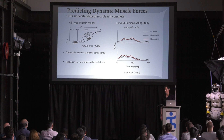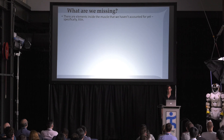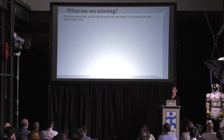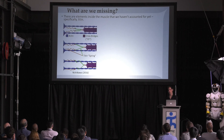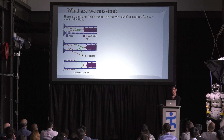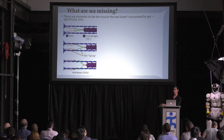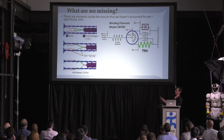That begs the question: what are we missing? In the last 15 years there's been a lot of work showing how a spring-like element inside muscle that we once thought was passive is actually a bit more active, and that it binds to relatively rigid members inside the muscle during contraction. Taking it a step further, we think it winds — meaning it is a lot more responsible for muscle forces than we previously thought.